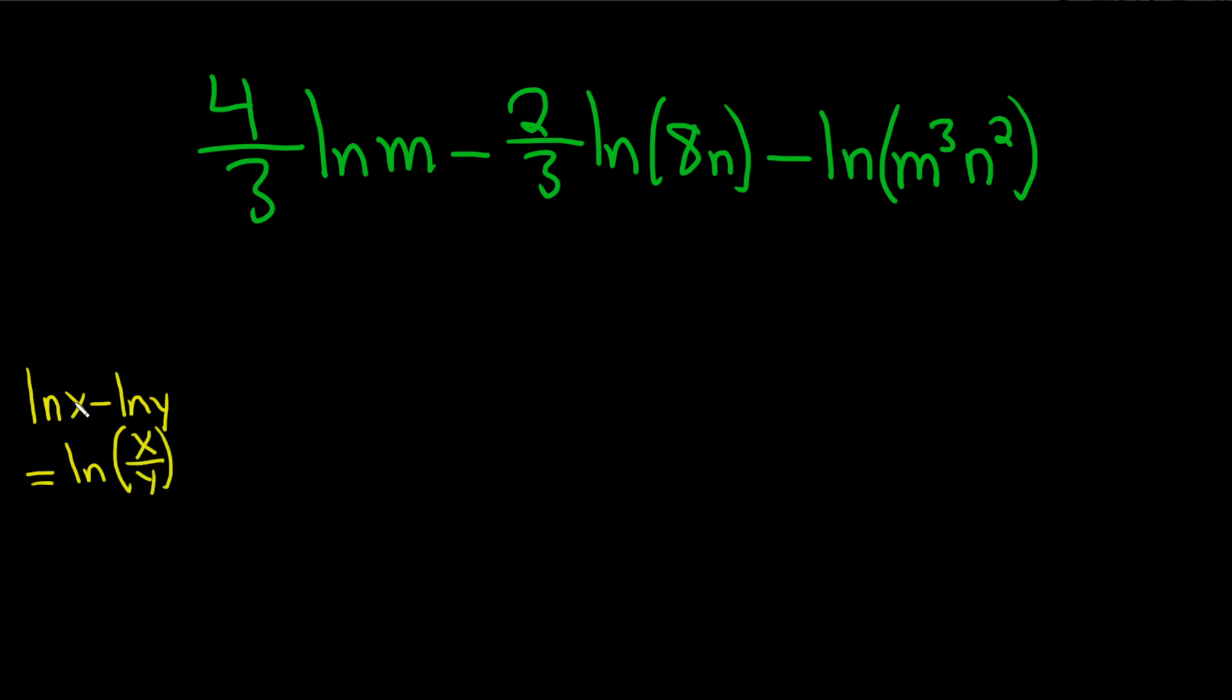So whenever you subtract, you can just divide what's inside the logarithms. The problem here is that we have numbers here in front of the logs. An easy solution to that is to remember that whenever you have a number in front of a log, you can just make it the exponent of whatever's inside the log.